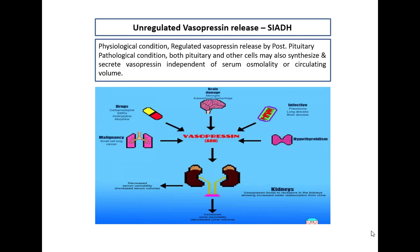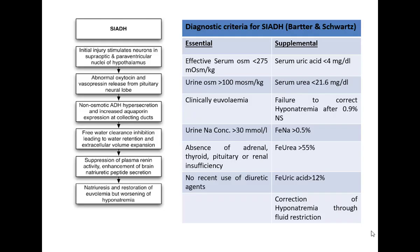SIADH causes include brain damage such as subarachnoid hemorrhage, infective pathologies like pneumonia, drugs like carbamazepine and SSRIs, malignancy such as small cell carcinoma of the lung, and hypothyroidism — though the latter is not well proven unless the patient progresses to myxedema coma. In SIADH, excessive ADH secretion causes water and sodium retention, arterial receptors get stimulated and secrete brain natriuretic peptide, causing natriuresis — hence SIADH is a cause of euvolemic hyponatremia.